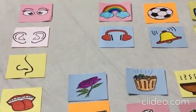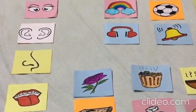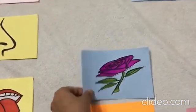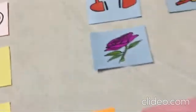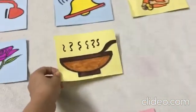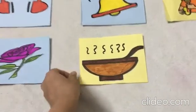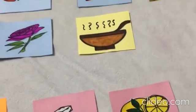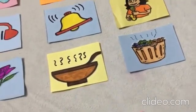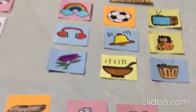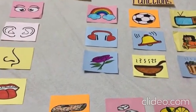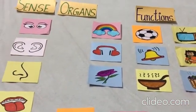The next sense organ is the nose. We can feel the fragrance of a flower with our nose. We can feel the aroma of food and the rotten smell of a dustbin or garbage. Hum apni naak se alag alag tarah ki khushbu aur badbu ko suung sakte hain.